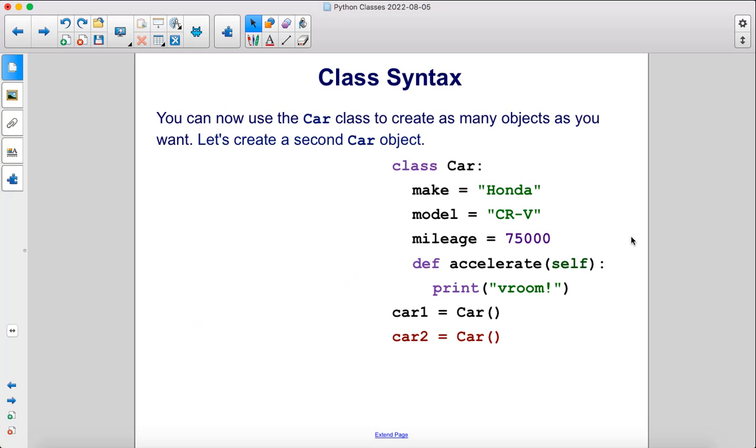You can now use the car class to create as many objects as you want. Let's create a second car object. So here we have our first object, car1, now we have another one, car2.